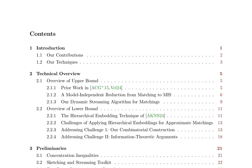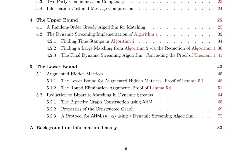The paper's contributions include settling the pass complexity of approximating maximum matchings in dynamic graph streams, presenting a randomized sketching-based semistreaming algorithm for O(1) approximation of maximum matching, and proving a lower bound of Ω(log log n) passes for any semistreaming algorithm. The techniques include a model-independent reduction from matching to MIS, a random order greedy algorithm for matching, and information-theoretic arguments for the lower bound. The results have implications for efficient algorithm design for dynamic graph streams and can potentially lead to new breakthroughs in this area.